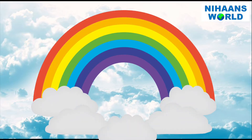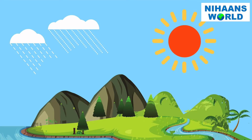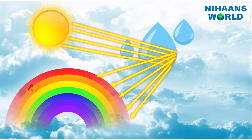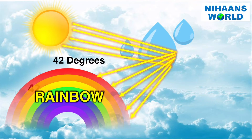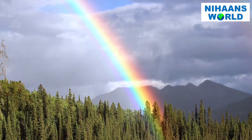A rainbow can only be seen when the rain and sun occur at the same time. As light enters a rainwater droplet, it bends slightly at separate 42 degree angles, forming different light rays. The diffraction is separating the light into all of the colors of the spectrum, and these colors are what we see in the sky as a rainbow.